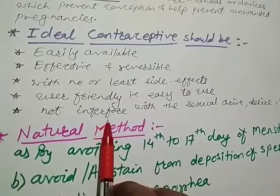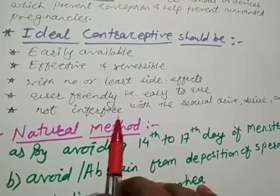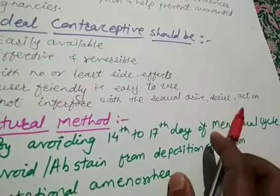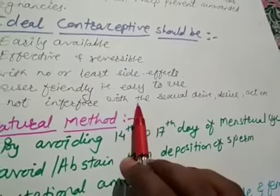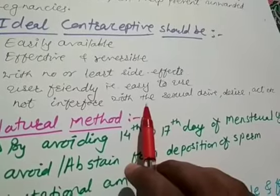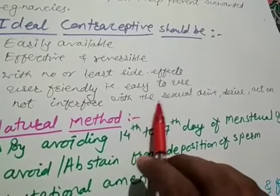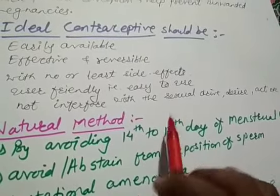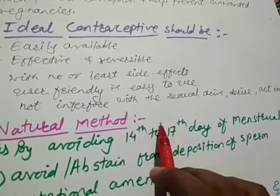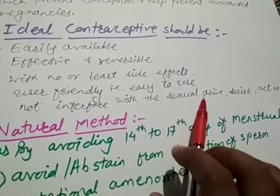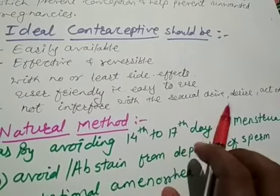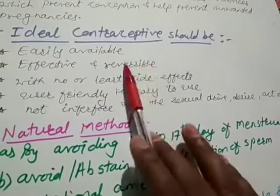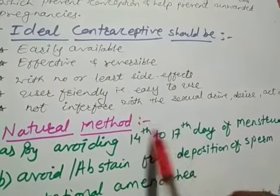Another property is that the contraceptive should not interfere with the sexual drive, desire, or the sexual act. If it does not change or affect any of these things, then it is good for utilization — meaning it will not interfere with the sexual drive, desire, or sexual act of the user. We can then say that it is an ideal contraceptive.